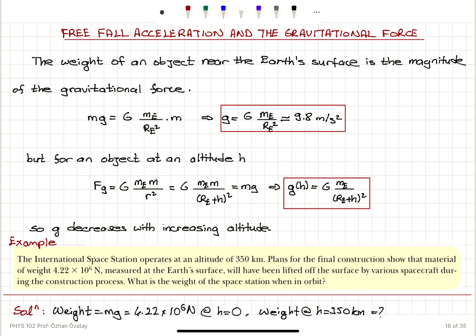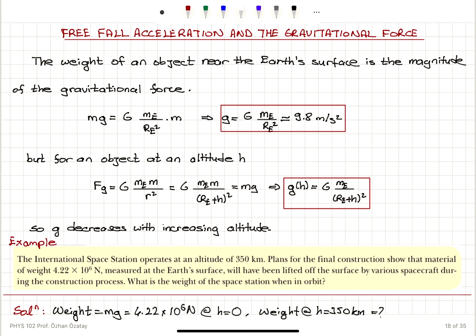In summary, the freefall gravitational acceleration is found by equating the weight of an object to the magnitude of the gravitational force. g has a value of 9.8 meters per second squared at the Earth's surface. However, at altitude h, it equals G·M_E divided by (R_E + h)². A meaningful change in g only occurs when h is comparable to the radius of the Earth. If h is just 1 meter and R_E is 6,370 kilometers, h is negligible.